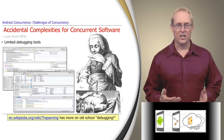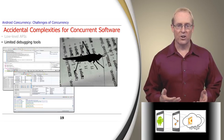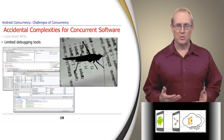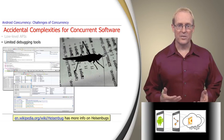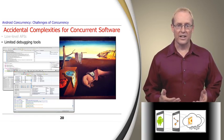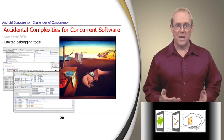One problem is that the behavior you see in the debugger doesn't necessarily reflect the actual behavior of the deployed software, which is often called a Heisenbug, since the act of observing a system inevitably alters its state. For example, you may use a debugger to single-step through some code in one thread while other threads are running, but the execution sequence and the execution times may differ if the program was running outside of the debugger.